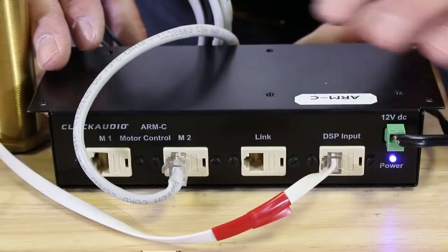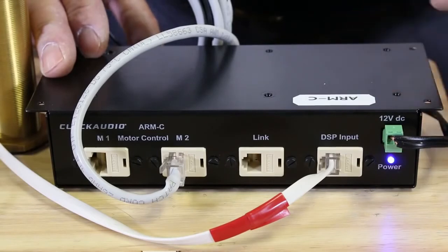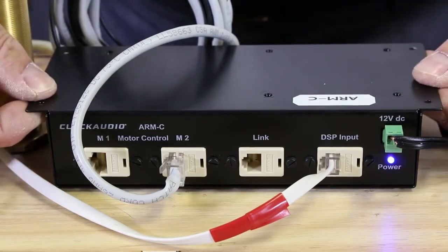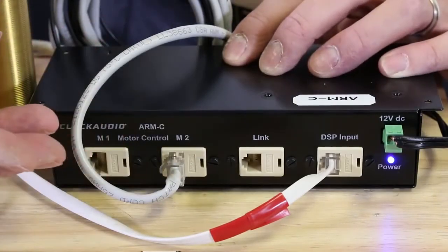We've gone ahead and unmounted our ARM-C and turned it around so you could see some of the connectors that we talked about previously. The unit does have flanges, it's designed to mount underneath a conference room table, and it has several connectors on it.